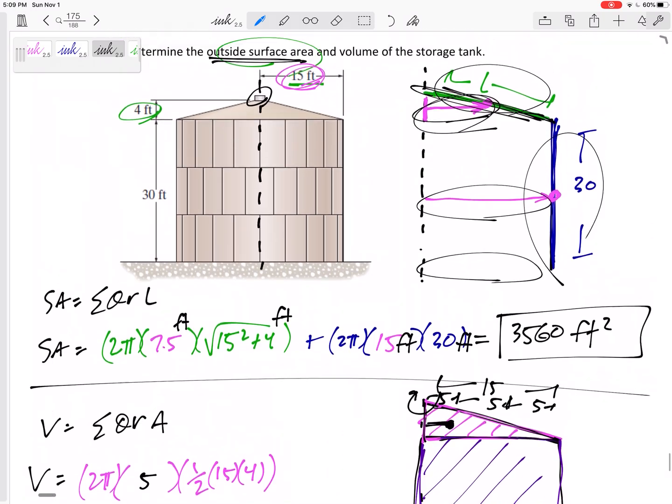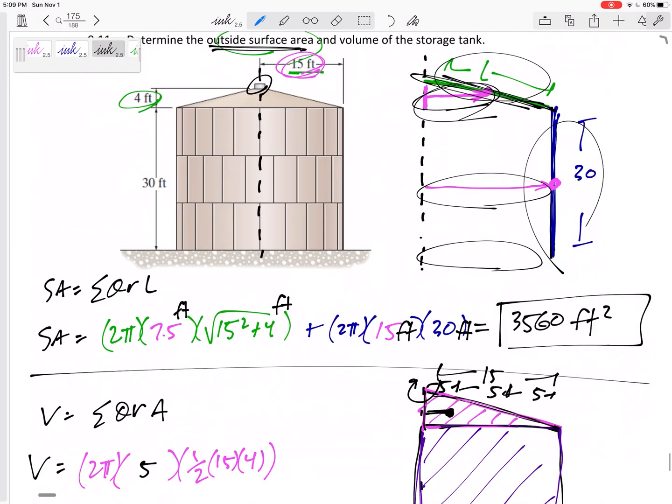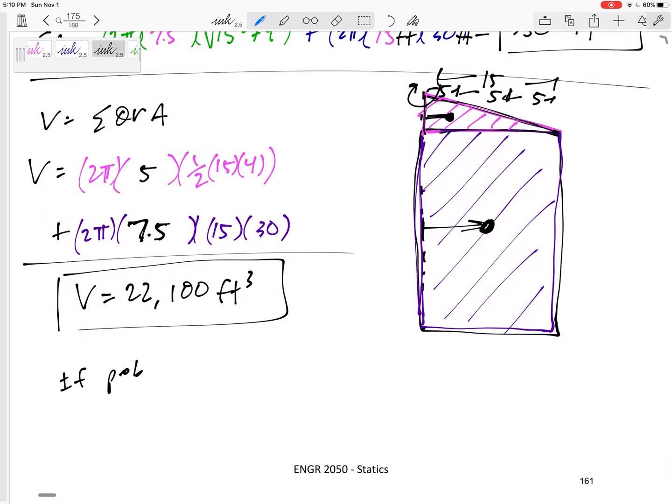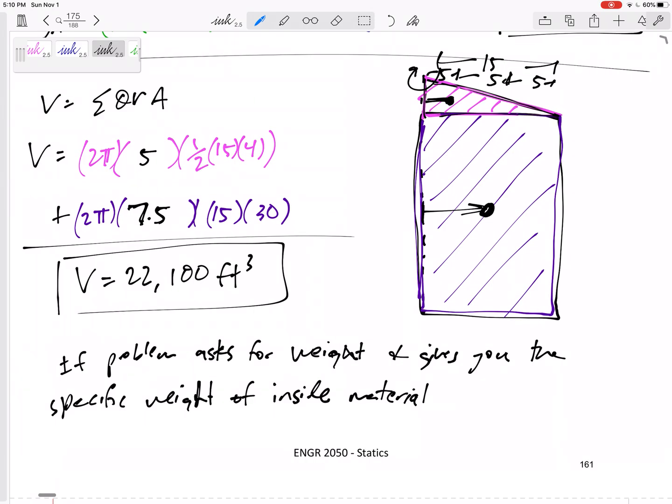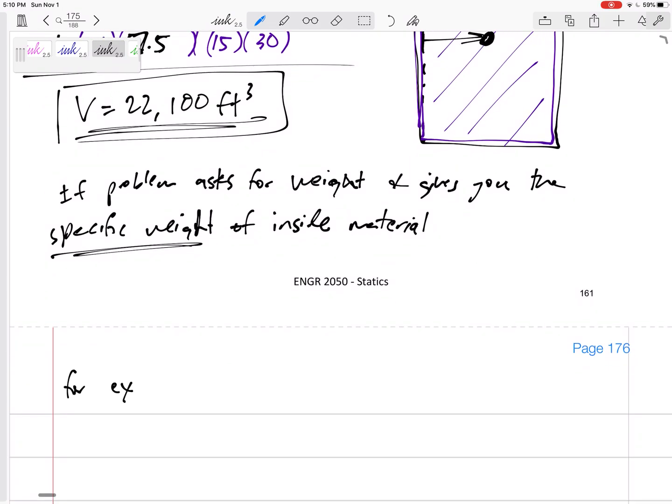Now this problem doesn't ask for it, so I would stop right there, boxes in check, check, you know, I've got it. I've answered the question. But sometimes the problem asks for not the volume, but the weight, and it gives you the specific weight, the specific weight of the inside material, I should say that a little bit better. But let's say it's filled with some material and it asks you for the weight of the material inside of that, right? How can we use theorem of Pappus and Guldinus to find the weight? Well, we can't. We use the theorem of Pappus and Guldinus to find the volume, and then we use the volume and the specific weight to find the weight.